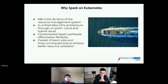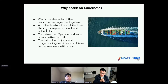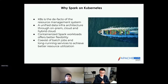As a user, you might want to understand why we want to run Spark on Kubernetes. Kubernetes is now the default resource management system, and many companies are building a unified data infrastructure — on-premise, public, or hybrid cloud based on Kubernetes. Moving Spark to containerized workloads offers better flexibility and isolation. The coexistence of batch jobs and long-running services can also achieve better resource utilization, as long as we have fine-grained control on resource management.